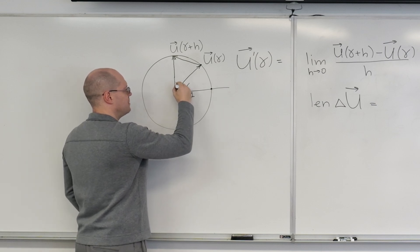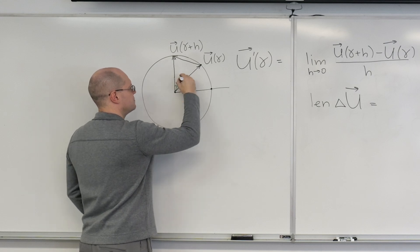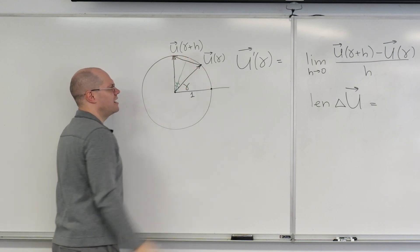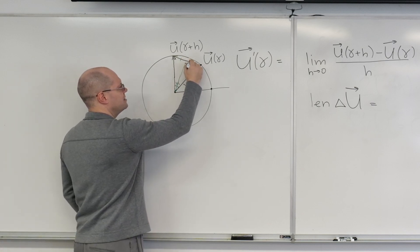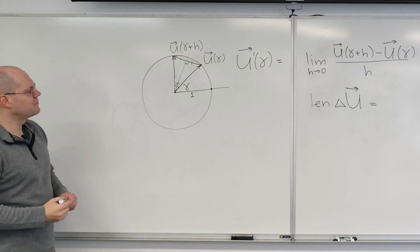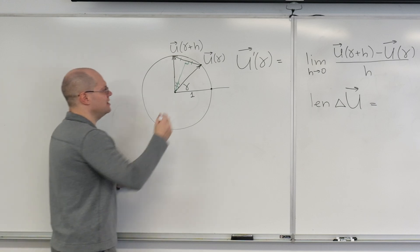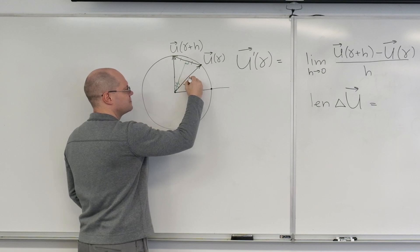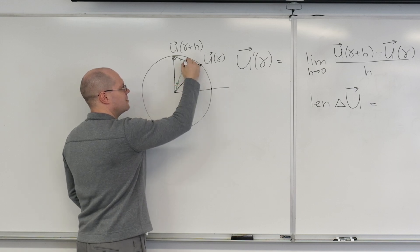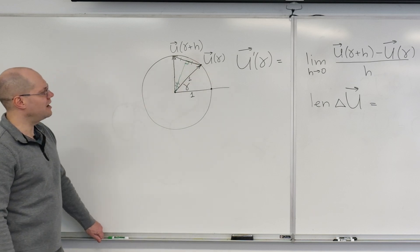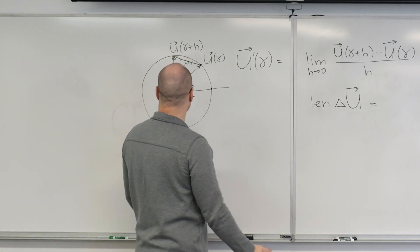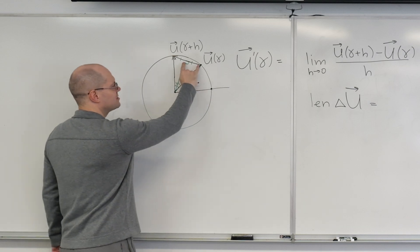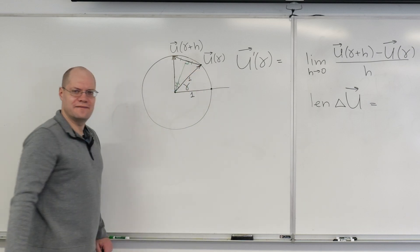So we have to bisect this angle. And because this triangle is isosceles, the bisector is also orthogonal and divides this in two. And if this radius right here and this vector is length one, then this side right here is one times sine of H over two. Yeah, sine of H over two. But that's half the side. We need the whole side. So it's two.